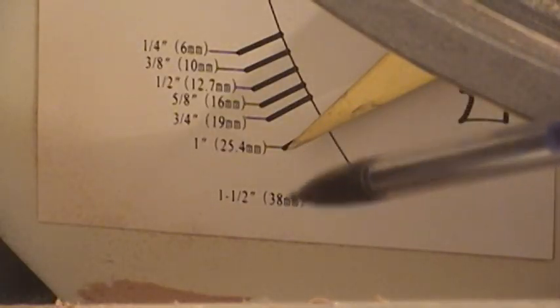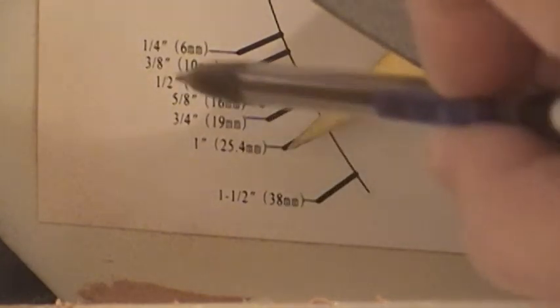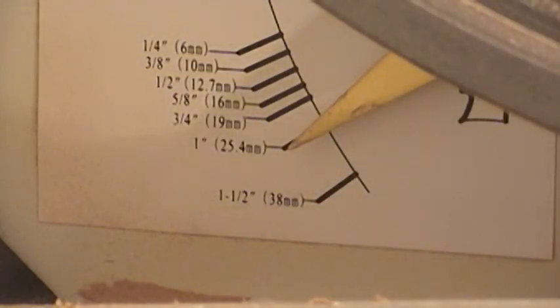Inside my bandsaw, behind the top wheel, is a tension gauge that's built in, which tells you how much tension you're supposed to put on each width of blade that you're using. Now this blade that I'm using now is a half inch.